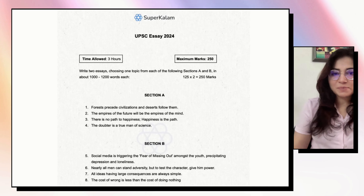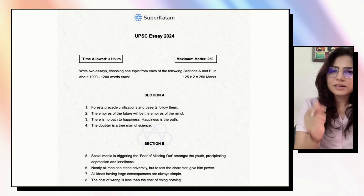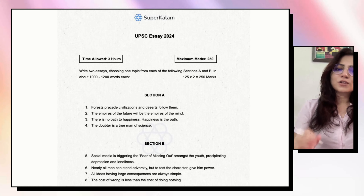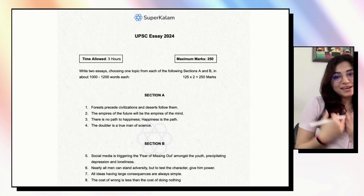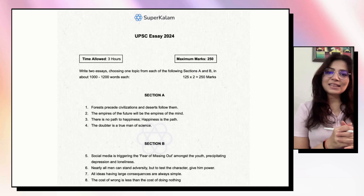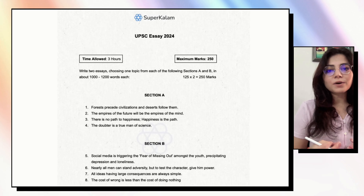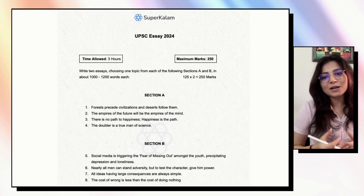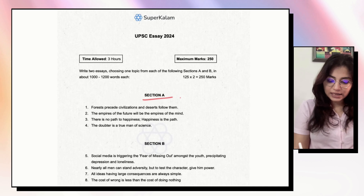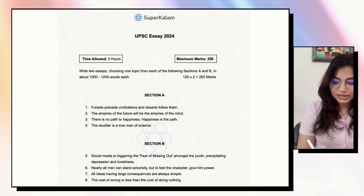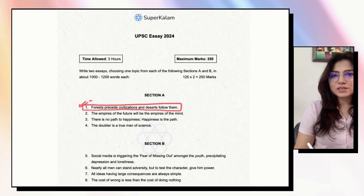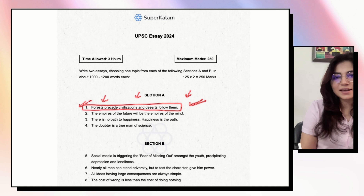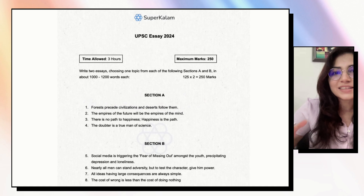Now let's go through this year's question paper. We'll go through each and every topic and understand in short the meaning of these topics. Then we'll choose any two topics — which topic I would have selected if I were an aspirant. In Section A, the first topic is: 'Forests precede civilizations and deserts follow them.' Let me help you understand the meaning of this topic so you feel comfortable decoding it.